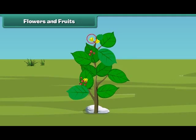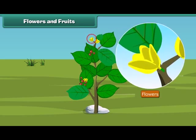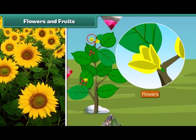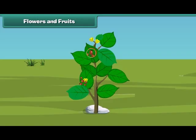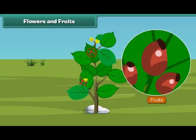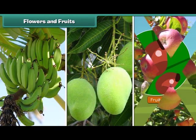Friends, now let us know about the most attractive and beautiful part of the plant — the flower. Flowers are of different colors and types, like sunflower, rose, and dahlia. I know that most of you also like fruits. Fruit is the juicy part of the plant. Fruits come in different shapes, sizes, and colors, like banana, mango, apple, and oranges.